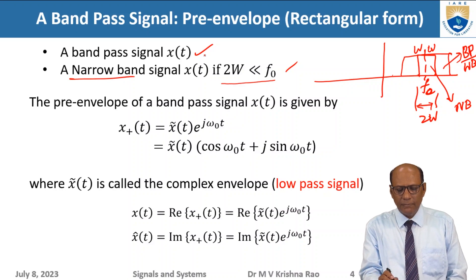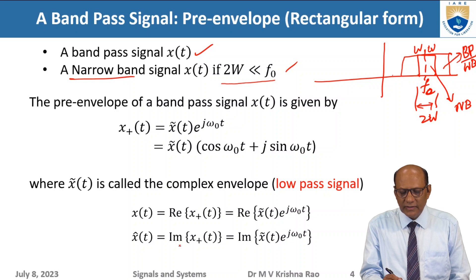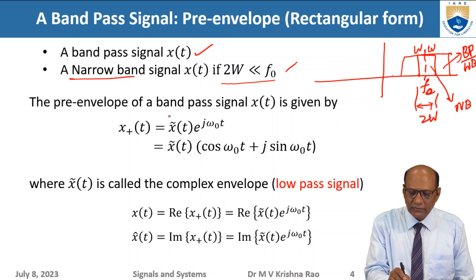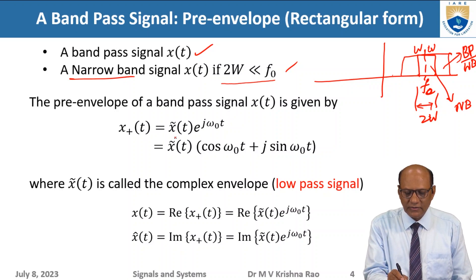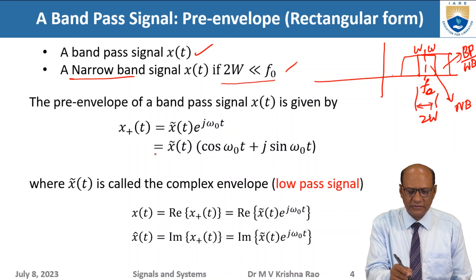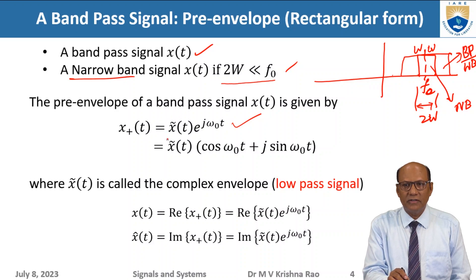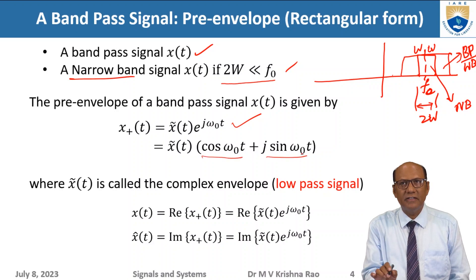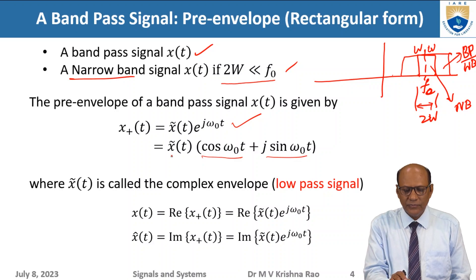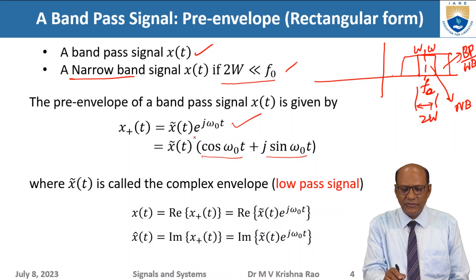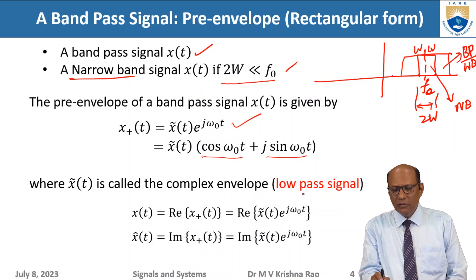The pre-envelope of the band pass signal x(t) can be written as x-tilde(t) times e to the power of j-omega-naught-t. Here x-tilde(t) is the complex envelope — it is a low pass signal containing only low frequencies. When expanded, there are two components: an amplitude function and a phase function, giving cosine and sine terms.